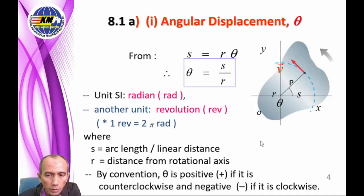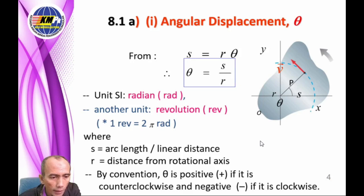Let us look at angular displacement. Based on the diagram, S equals R times theta, where theta equals S over R. S is the arc length or linear distance, and R is the distance from the rotation axis. The SI unit for angular displacement is the radian. Another unit is revolution, where one revolution equals 2π radians. By convention, theta is positive if counterclockwise and negative if clockwise.